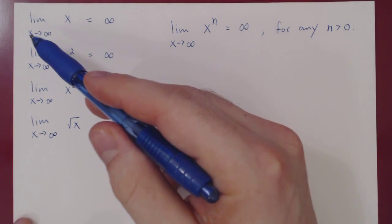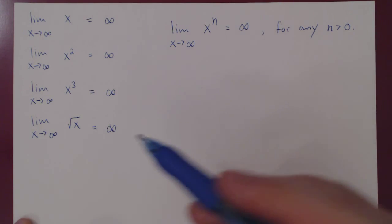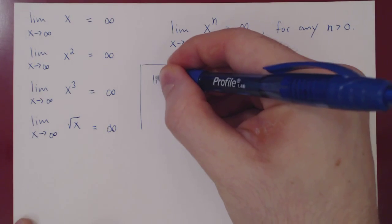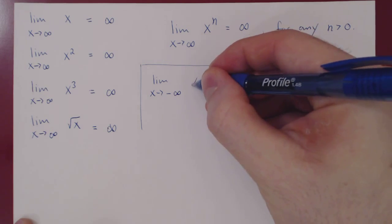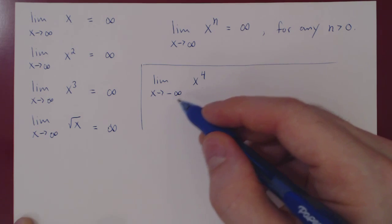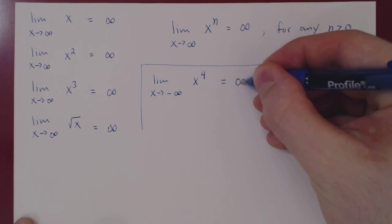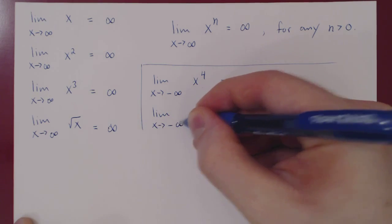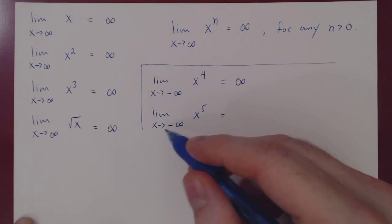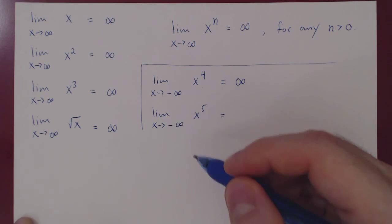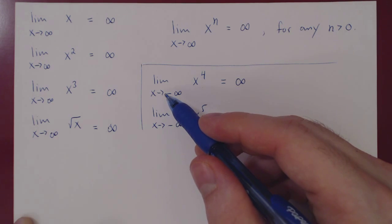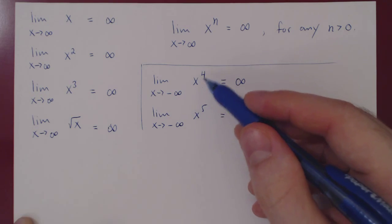You may ask: what happens if we let x approach negative infinity? It's kind of the same answer, except that for odd powers, the answer will be negative infinity. For example, x to the 4: an even power of a negative number is positive, so as x goes to negative infinity, x to the 4 goes to positive infinity. On the other hand, x to the 5 is an odd power, and an odd power of a negative quantity is also negative, so x to the 5 goes to negative infinity. Just be careful when x approaches negative infinity to consider whether the power is even or odd.